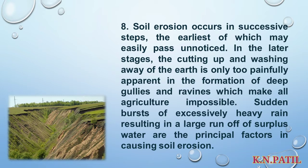This problem of soil erosion cannot occur in a day or two — it has its own successive steps. In the earlier stages, we cannot notice this problem. But in the later stages, it can create gullies and ravines, and those gullies and ravines make agricultural activities impossible. Whenever there is a sudden burst of excessively heavy rain, we can see a large runoff of surplus water, which will create soil erosion. This is the biggest reason for soil erosion — that is the principal factor.